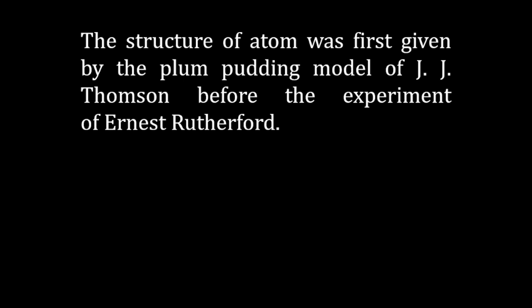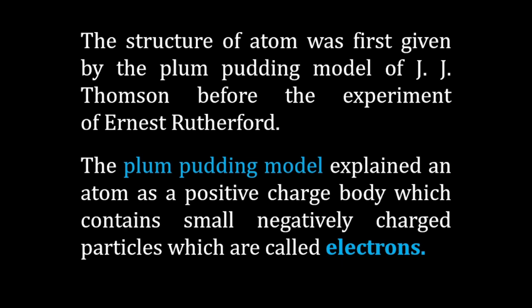The structure of the atom was first given by the plum pudding model of Joseph John Thomson before the experiment of Ernest Rutherford. The plum pudding model explained an atom as a positively charged body which contains small negatively charged particles, which are called electrons.